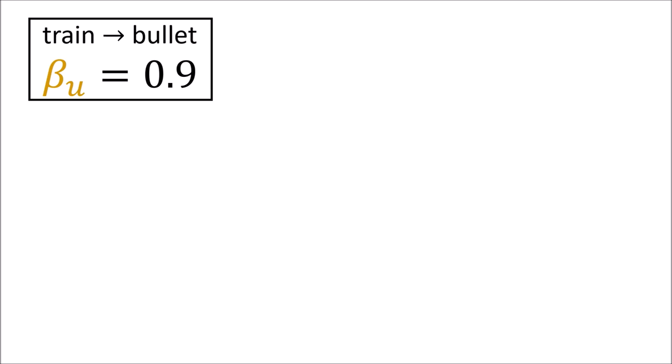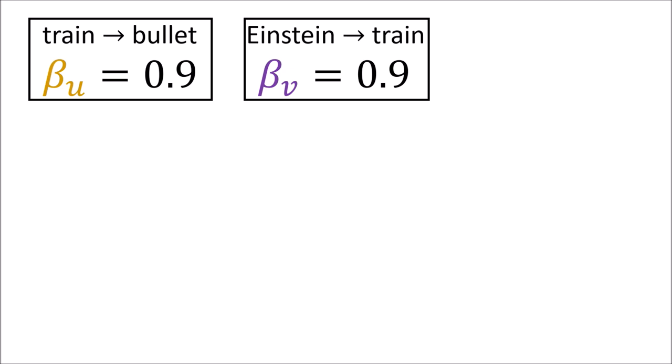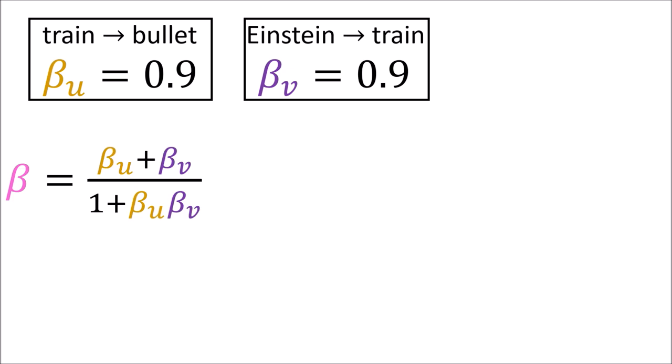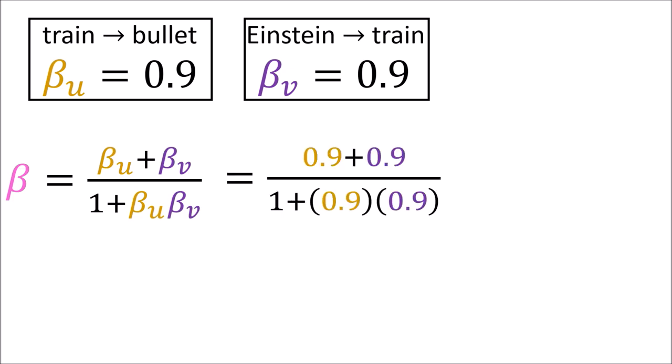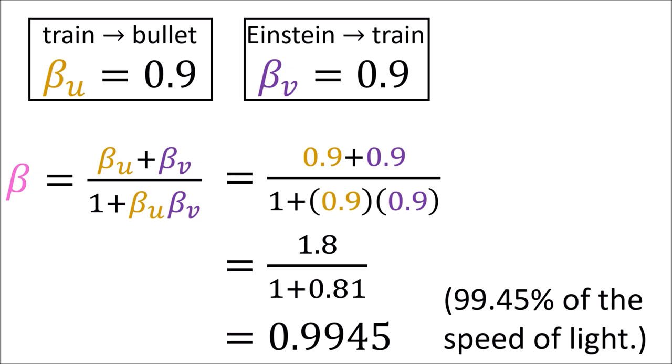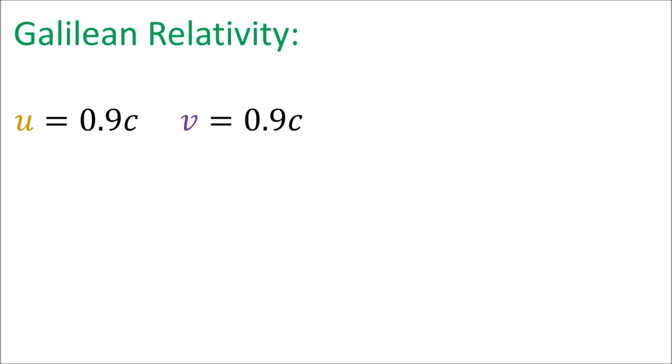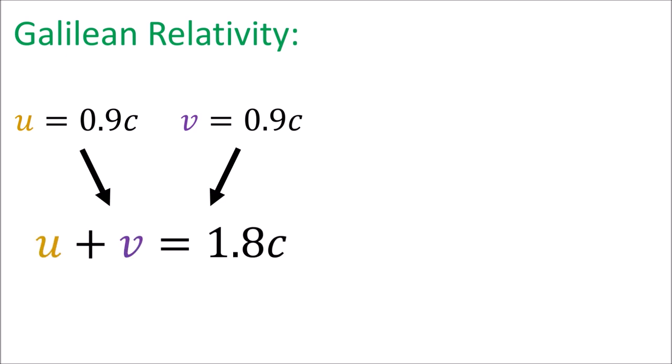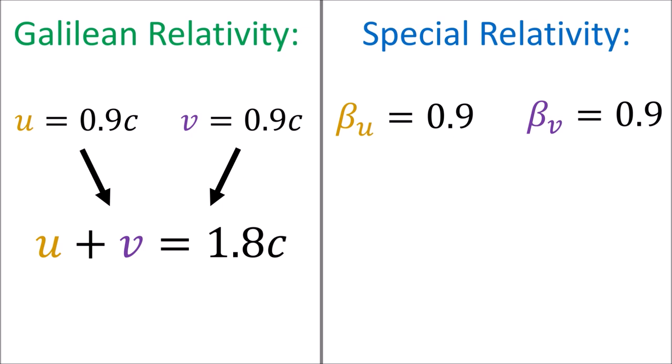Let's see what this new beta coefficient is when beta-u — the speed of the bullet relative to the train — is 90% the speed of light, and beta-v — the speed of the train relative to the ground — is also 90% the speed of light. According to this formula, the new beta is (0.9 plus 0.9) all over (1 plus 0.9 times 0.9), which gives us 1.8 divided by 1.81 — about 99.45% the speed of light.